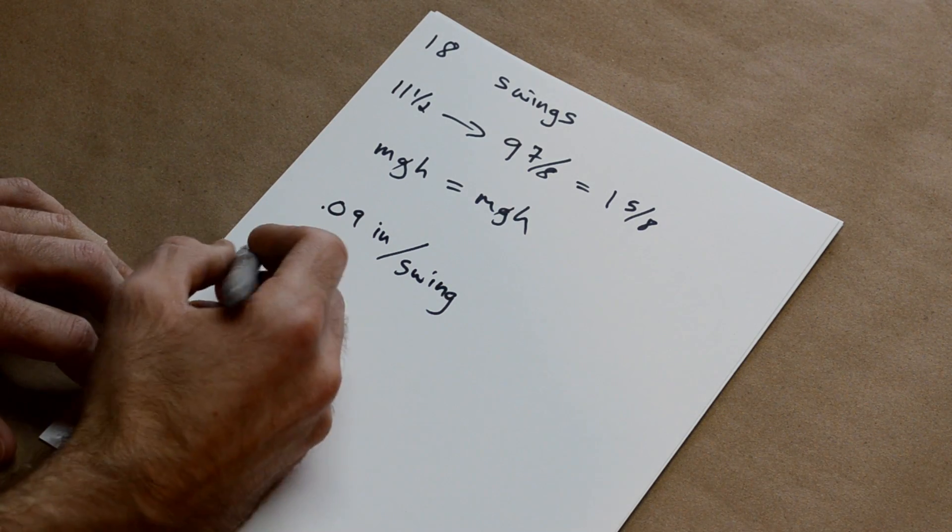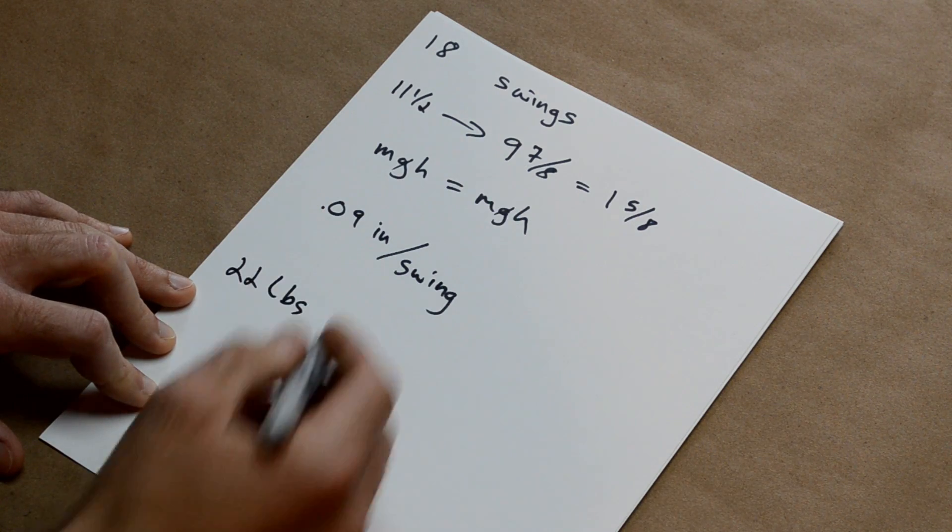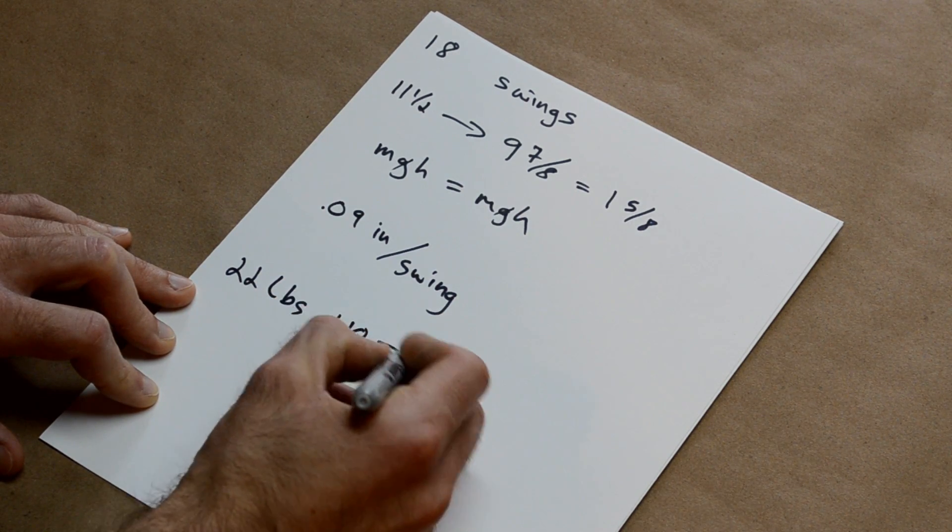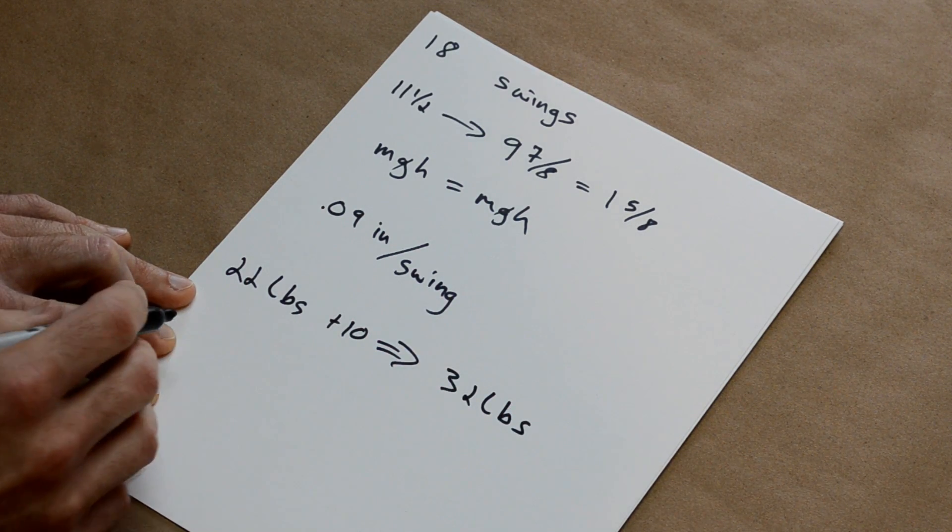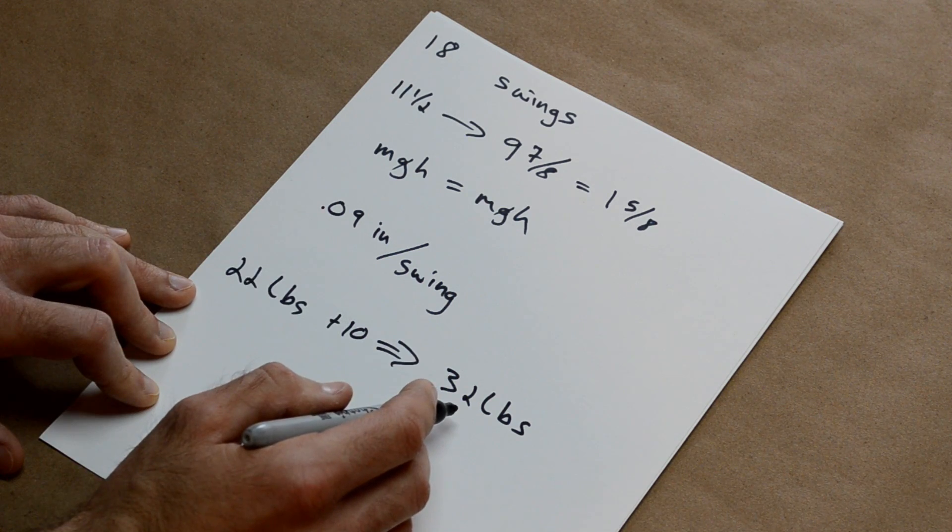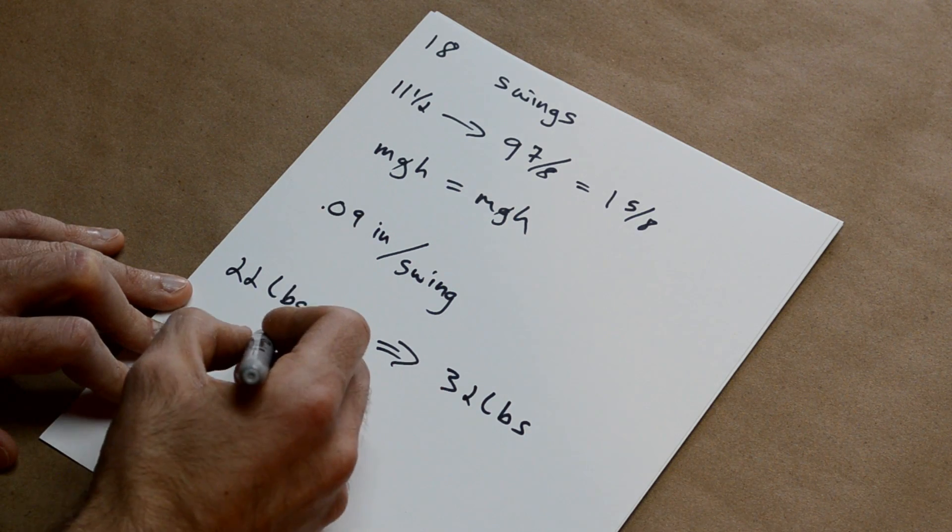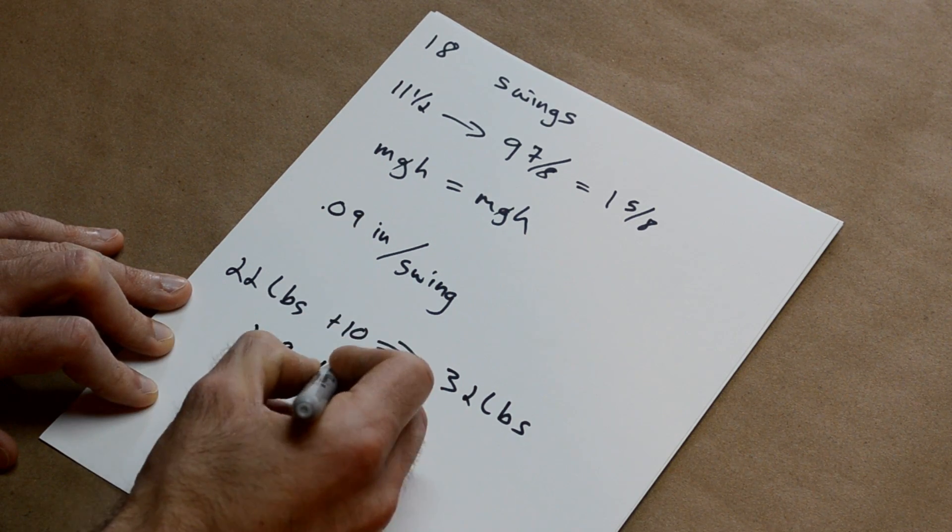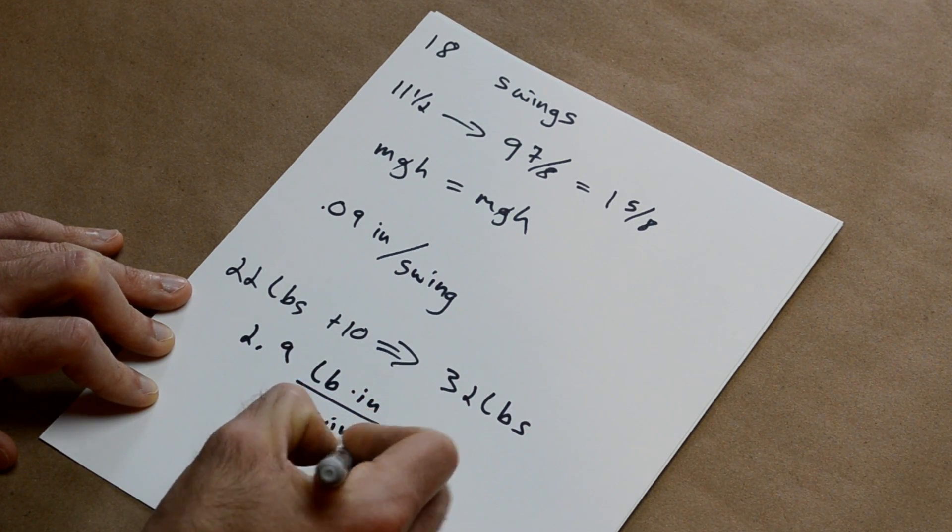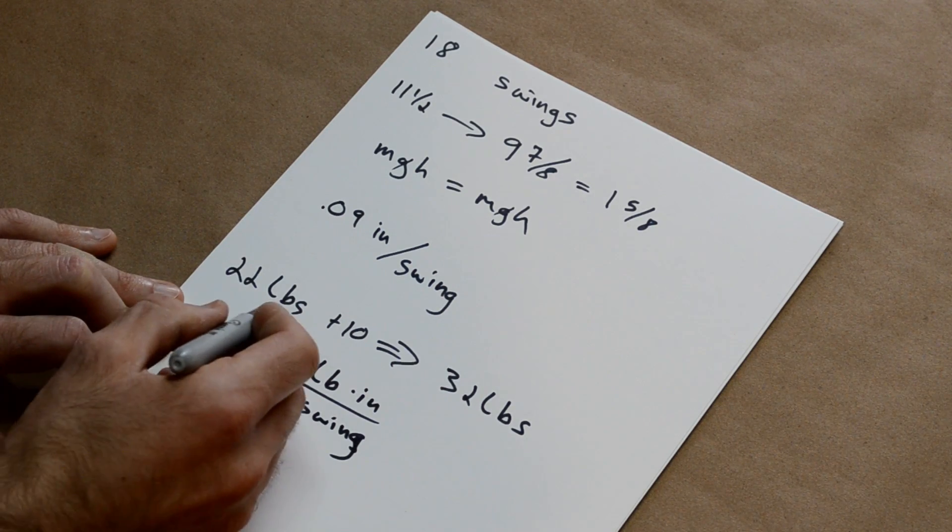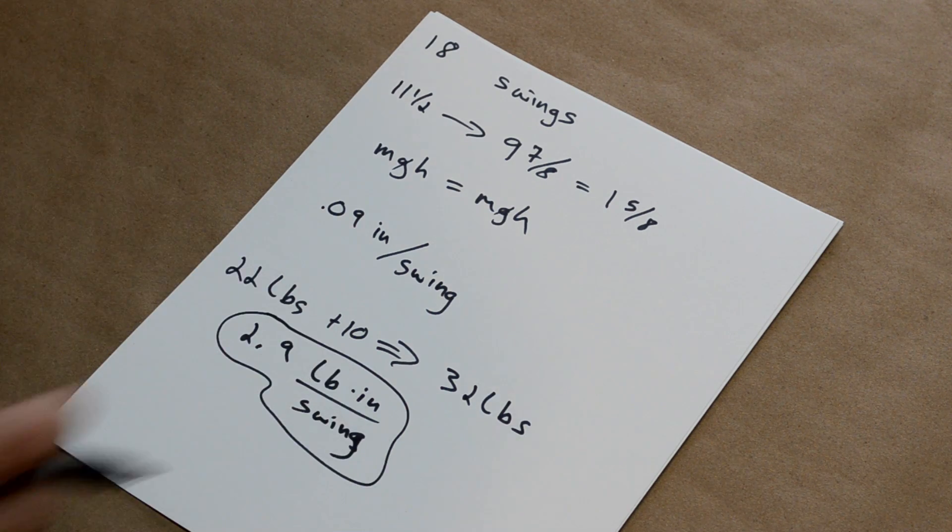Now that iron piece inside was 22 pounds, and I weighed the frame assembly underneath, that was 9.8, we'll call it 10. So this is going to be 32 pounds of total weight there, and we'll take 32 times .09, and we'll find out that it's about 2.9 pound inches per swing. This is how much energy it takes to maintain our pendulum in the current setup.